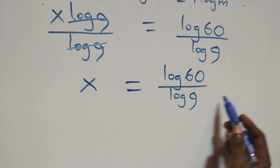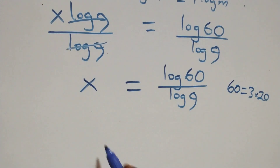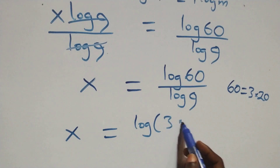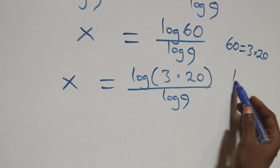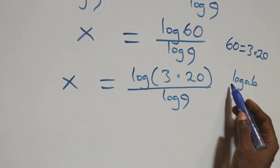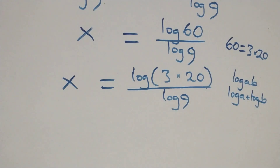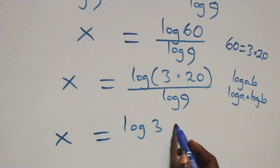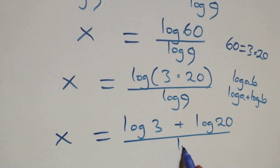Then, 60 can be expressed as 3 times 20, which implies x equals to log(3 times 20) over log 9. This follows the product rule of logarithms: log(a times b) is the same as log a plus log b. So what we have becomes x equals to log 3 plus log 20, all over log 9.